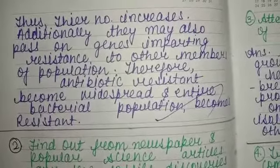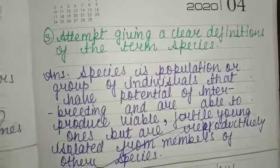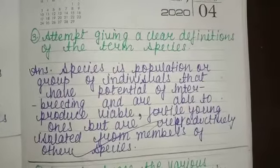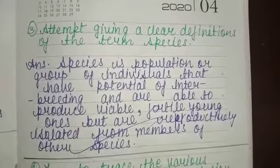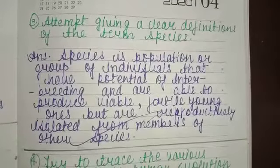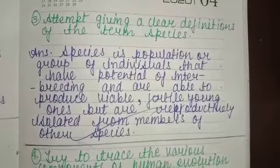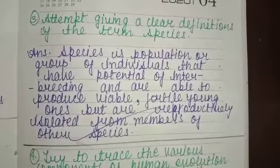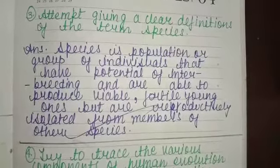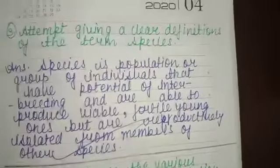Next question: Attempt giving a clear definition of the term species. Species is a population or group of individuals that have the potential for interbreeding and are able to produce viable fertile offspring, and are reproductively isolated from members of other species.